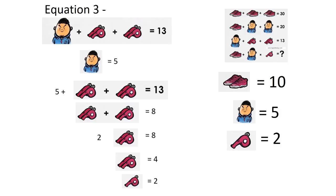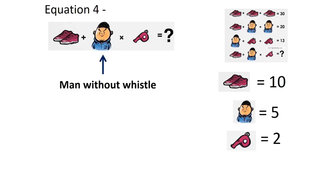Equation 4. The man is without the whistle, so man minus whistle will be 5 minus 2, that is 3.